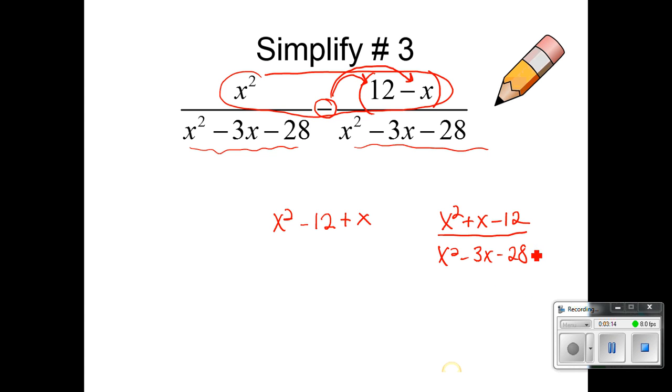And now I can simplify both the top and the bottom by factoring the top and factoring the bottom like we have in the past. Two factors of negative 12 that make 1 would be 4 and negative 3. Put those in your squares. x squared 4x negative 3x negative 12. There's 4x and negative 3. So the top would become x plus 4 and x minus 3.